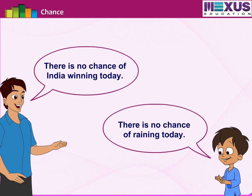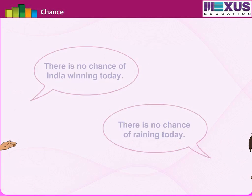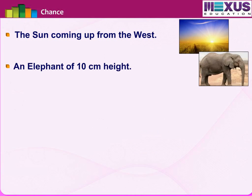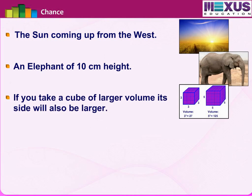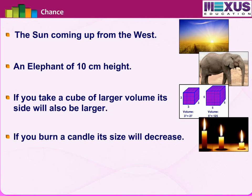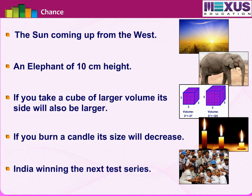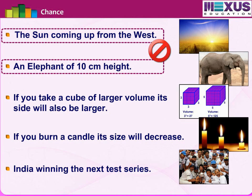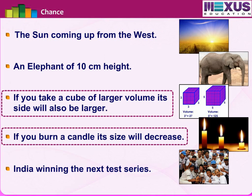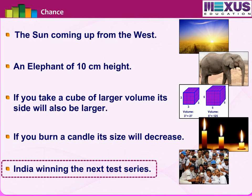We often say things like 'there is no chance of India winning today' or 'there is no chance of rain today.' Consider these statements: the sun coming up from the west, an elephant of 10 cm height — these seem impossible. A cube of larger volume having a larger size, or a candle decreasing in size when burned — these are certain. But India winning the next test series is a case where both outcomes are possible.